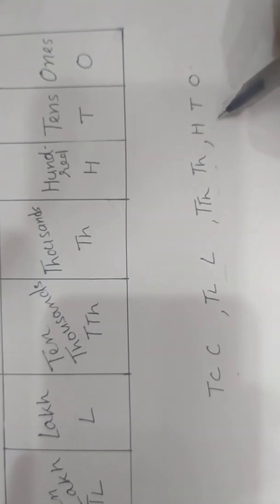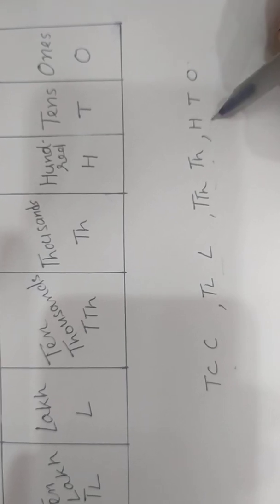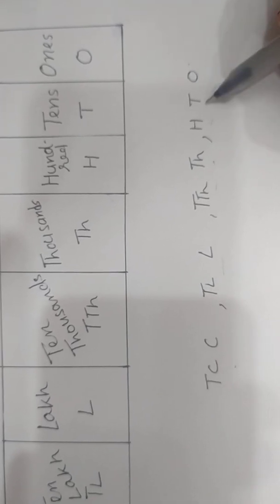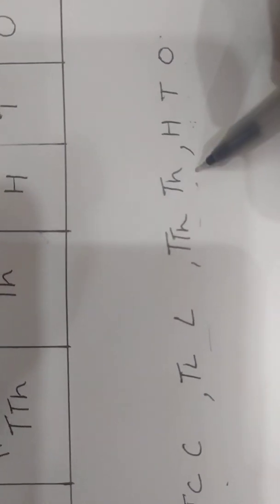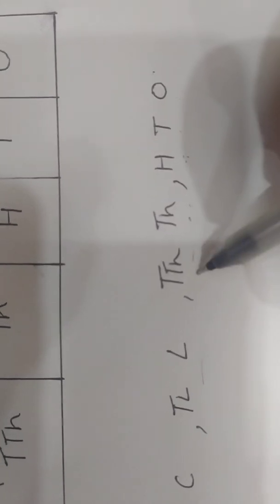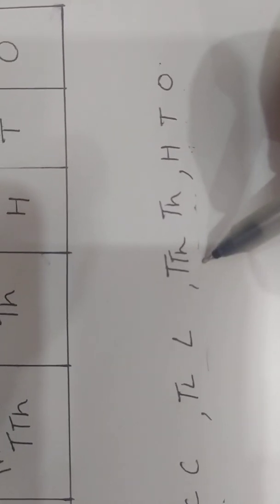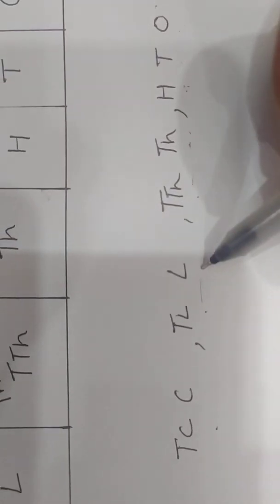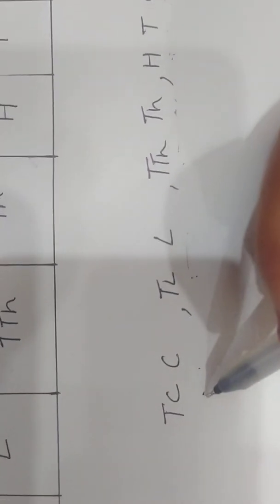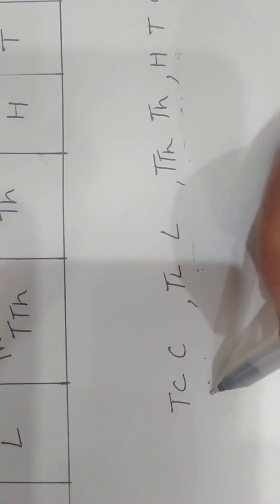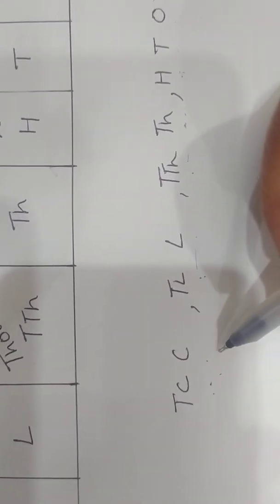The ones period group has three digits: ones, tens, and hundreds. The thousands period group has two: thousands and ten thousands. Lakhs period has lakhs and ten lakhs, and the crores period has crores and ten crores. Is it clear?